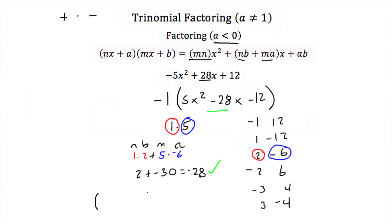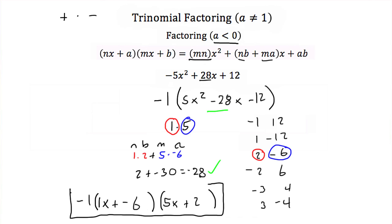So the factored form then would be 1x plus negative 6, which is x minus 6, times 5x plus 2. And then don't forget about your negative 1 — it goes on the outside. This is the factored form of negative 5x squared plus 28x plus 12. And that completes the tutorial on trinomial factoring.